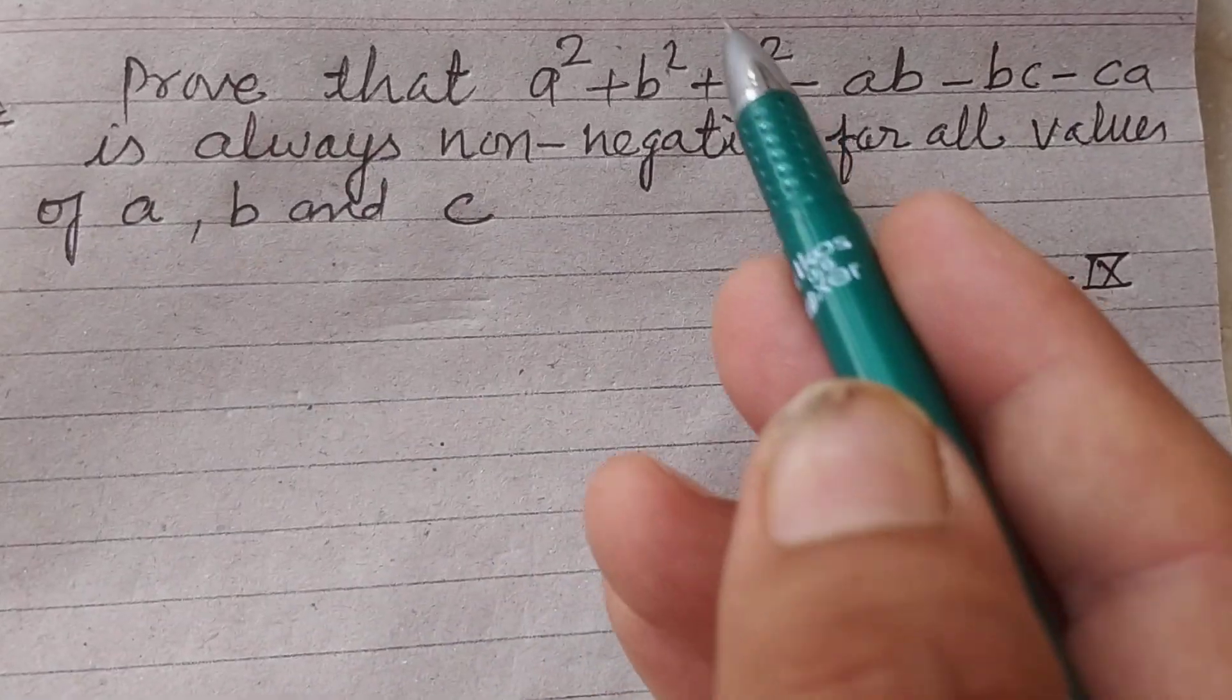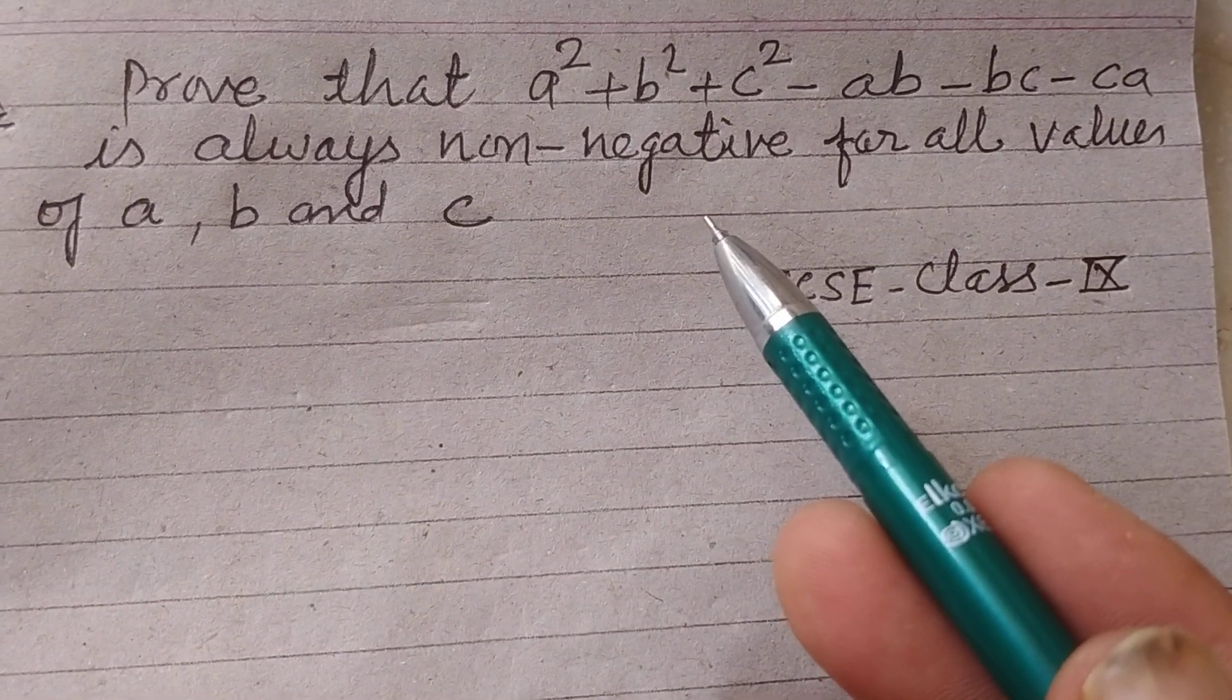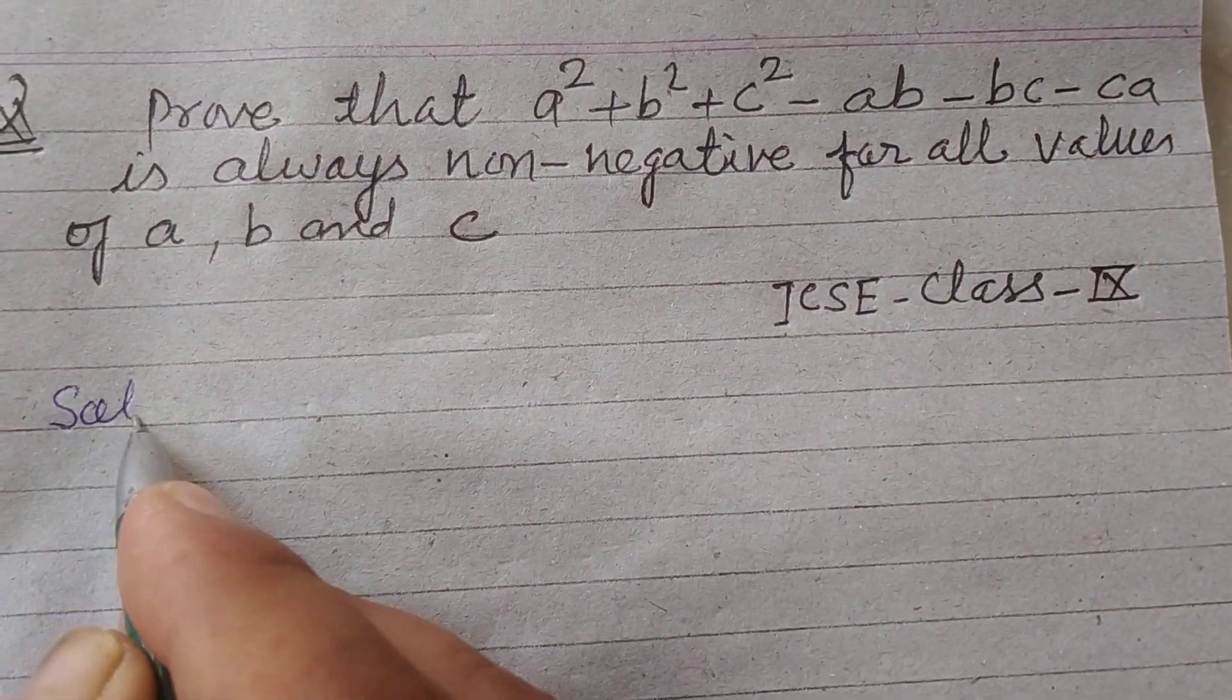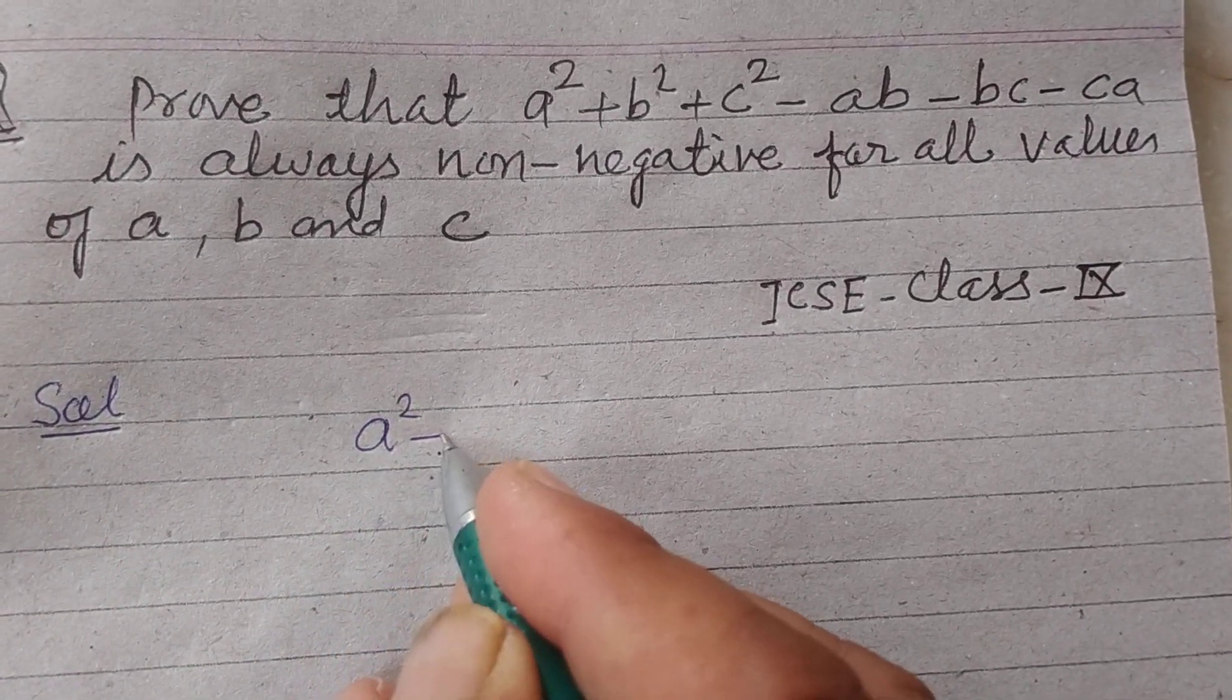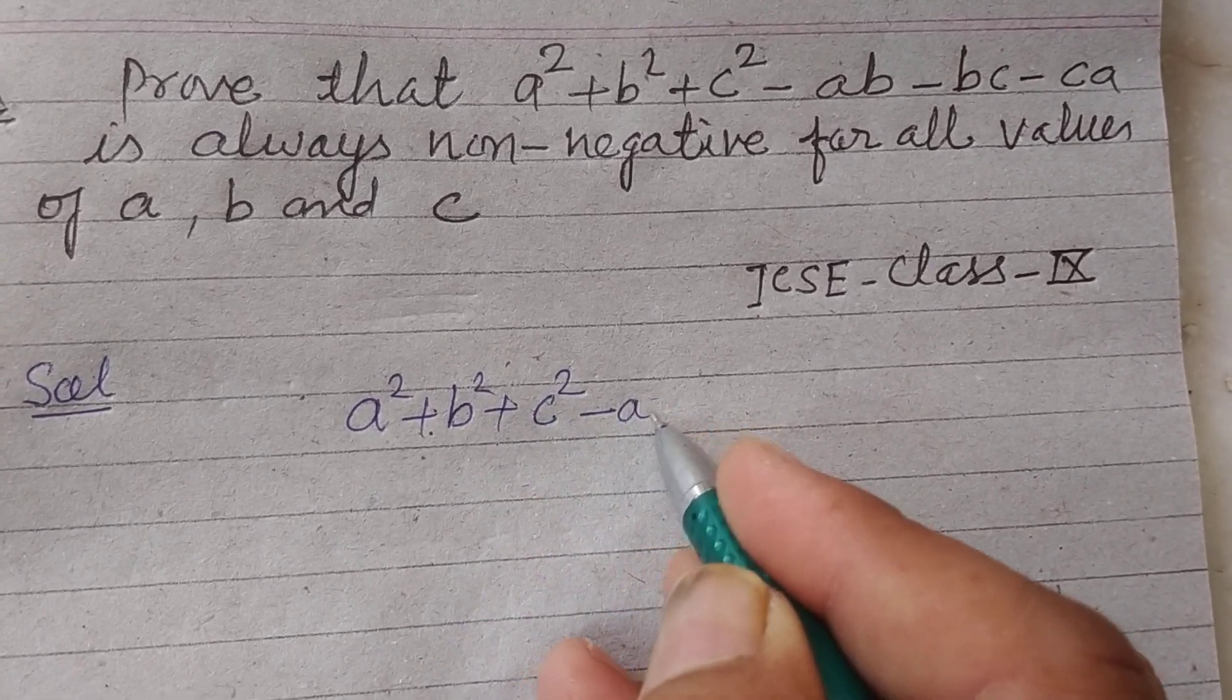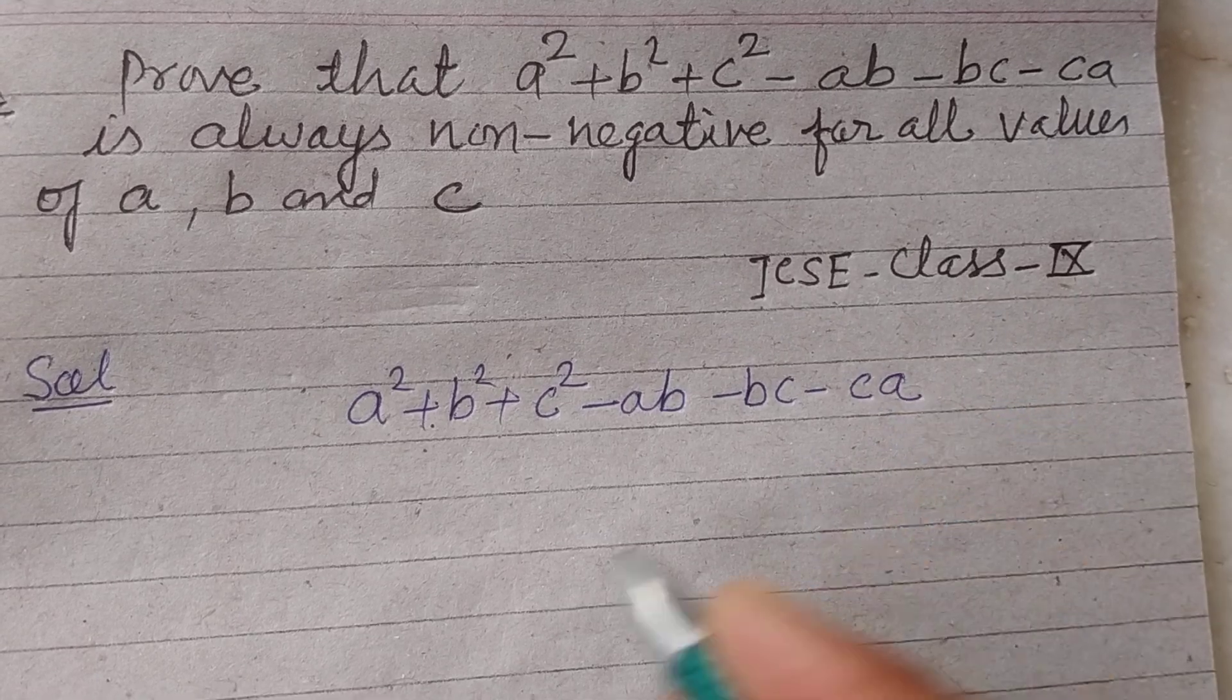We have to prove that this expression gives always non-negative value or positive value. So for this, we write the expression a² + b² + c² - ab - bc - ca.